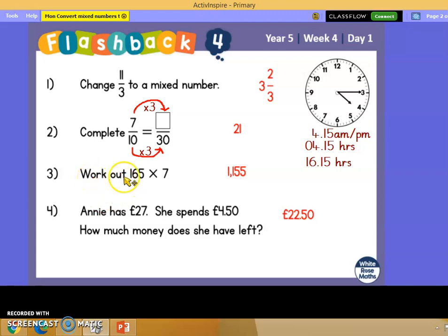Number 3, the answer is 1,155. On number 4, she has £27, she spends £4.50. So we do a subtraction to find out what money she has left, which is £22.50.